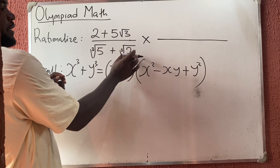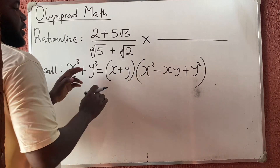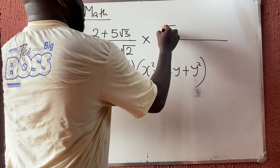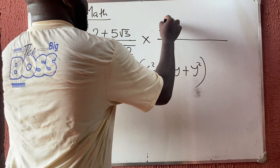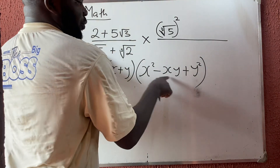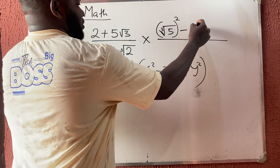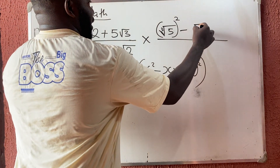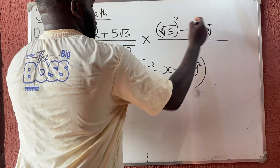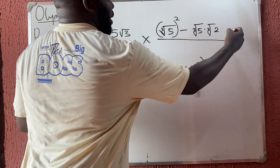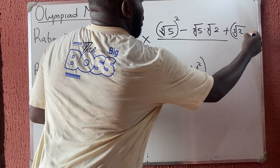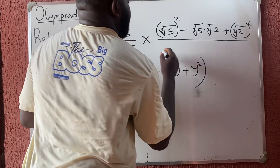Take the cube root of 5 as your x and the cube root of 2 as your y. So the multiplier is: the cube root of 5 all raised to the power of 2, minus the cube root of 5 times the cube root of 2...